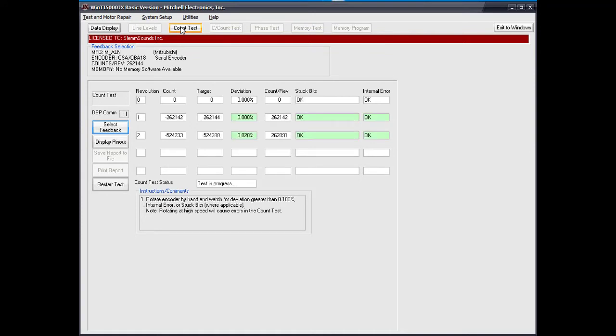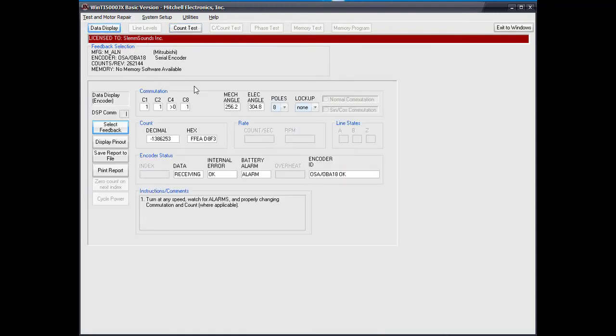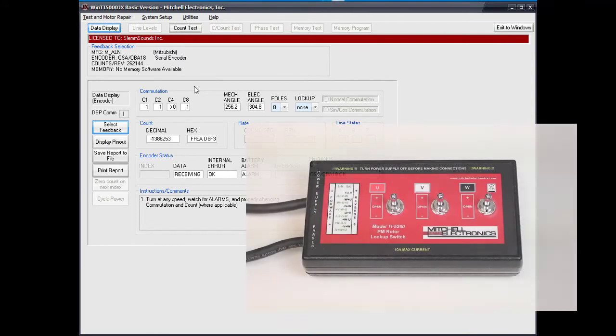If errors occur, check the spacing of the glass disc and make sure it is clean. Next, switch to data display to align the glass disc.